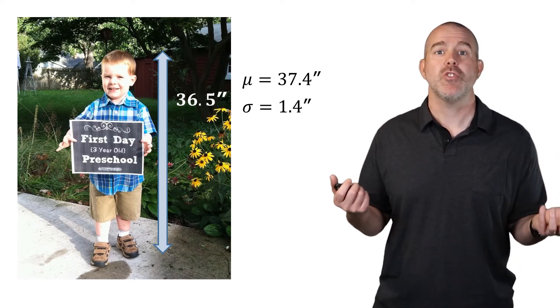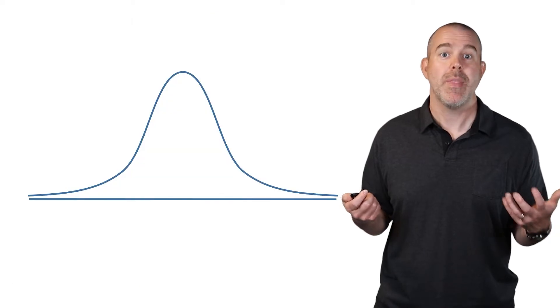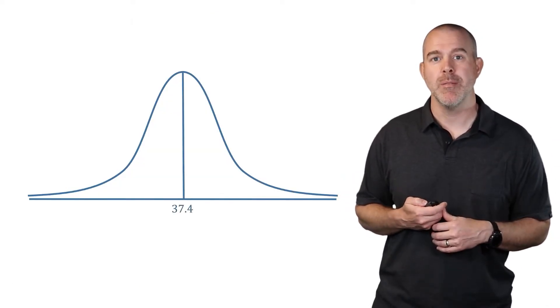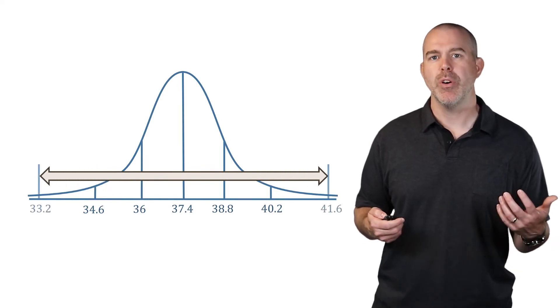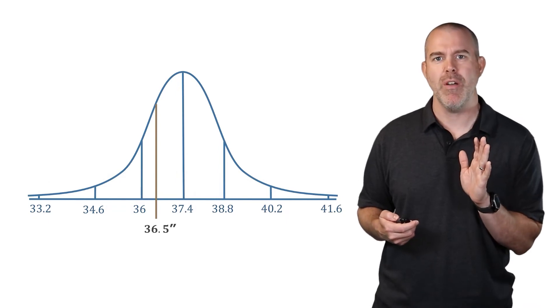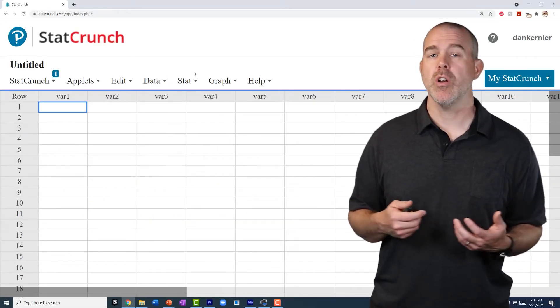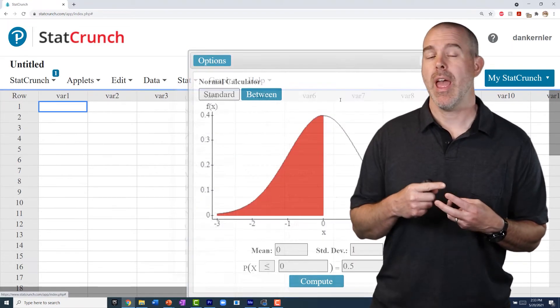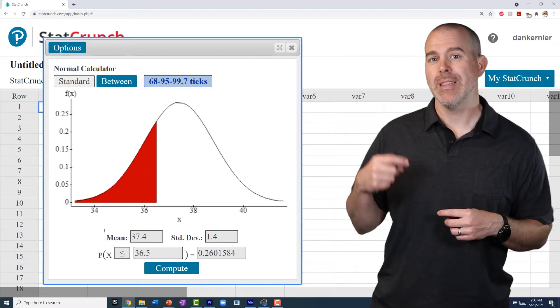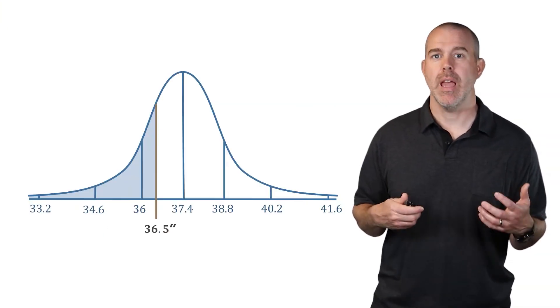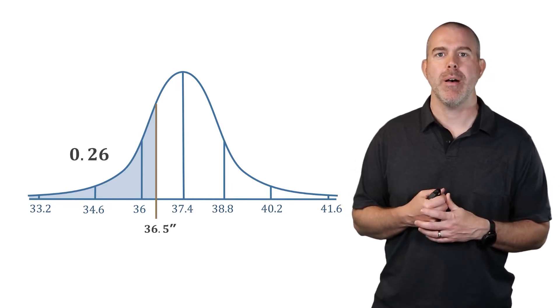The question you might have is, is this child short? What percentage of three-year-old boys are shorter than he is? Well, that's a normal distribution question. We know 37.4 is in the middle, we have a standard deviation of 1.4, so we can go out 1.4, another 1.4, another 1.4, and then we can put our 36.5 on there. We want to find the probability of being to the left of that. We can do this in StatCrunch. We go to Stat, Calculators, and then Normal. Put in our mean 37.4, our standard deviation 1.4, we'll go to the left of 36.5 and hit Compute. That tells us that about 26% of kids are shorter than 36 and a half inches. So not super short, definitely on the lower end, but not super short.